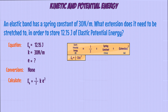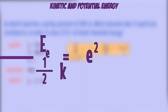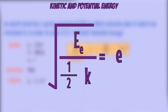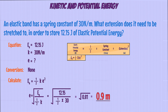Before you sub in the values, make sure you rearrange the equation properly. First we move the half and the k across by dividing both sides of the equation by half and k, giving extension squared equals elastic potential energy over half times k. To find what the extension is, you need to square root the whole thing: extension equals the square root of elastic potential energy over half times k. Subbing the values in, 12.15 divided by half times 30 gives you 0.81. A common mistake is to forget to square root it at the end, so make sure you remember to do that. Square rooting gives a final answer of 0.9 meters.